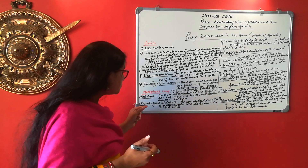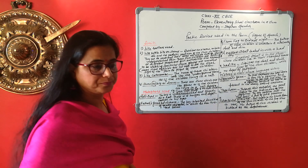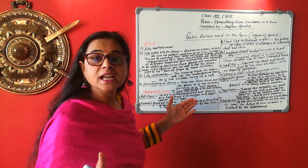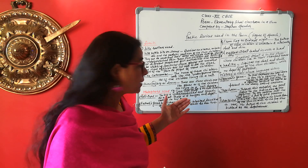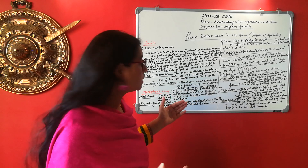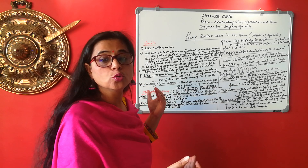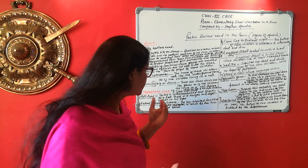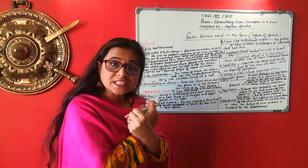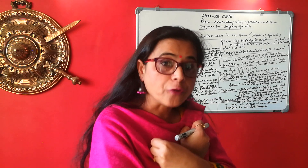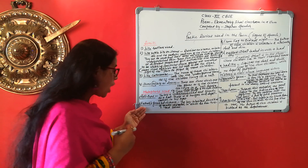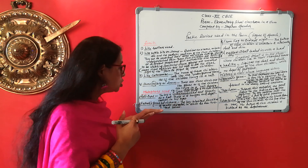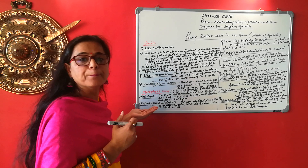Another example of metaphor is 'father's nile disease.' Generally we receive inheritance in the form of property, bank balance, money, or land. But there is one child in the classroom who did not get anything in inheritance except the twisted-bones disease from his father. The boy has been compared to the nile disease of his father. This is another example of metaphor.